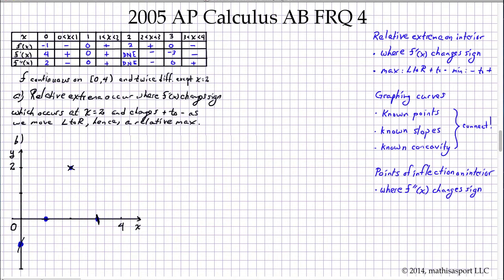We've got positive concavity at the beginning, so we're looking for a kind of curve like that. Then zero concavity — totally flat — right there. From 1 to 2 we've got a sort of positive concavity. We've got negative concavity in a downward slope, and then positive concavity in a downward slope.